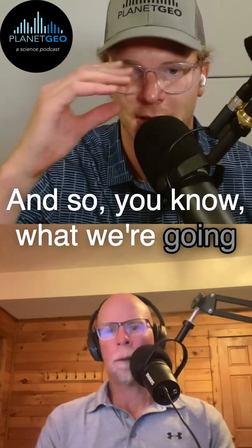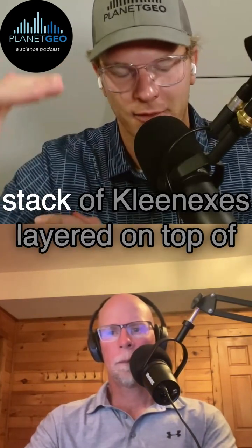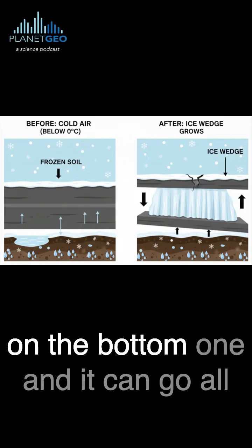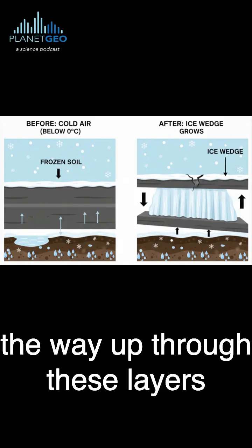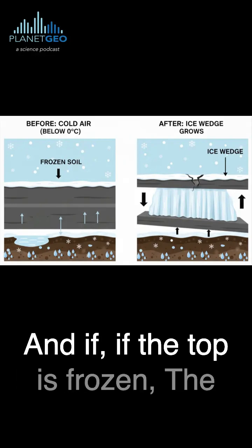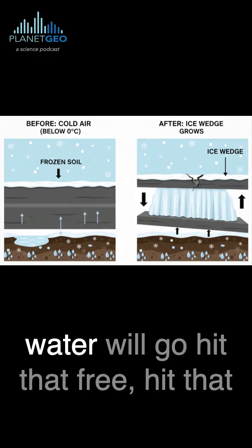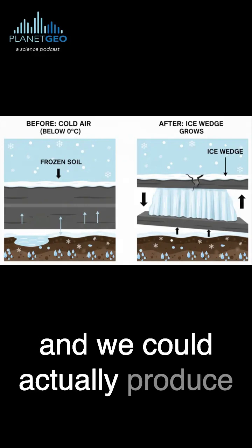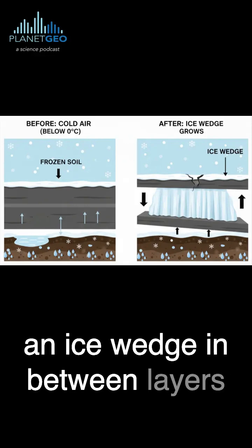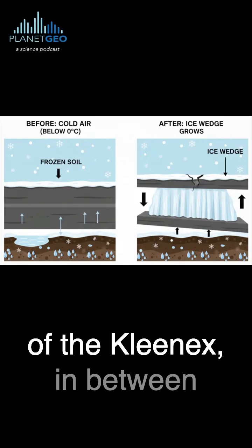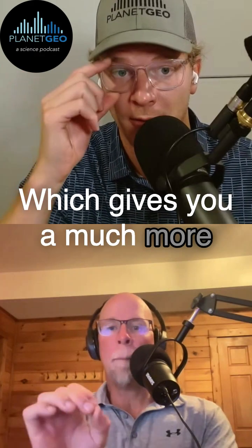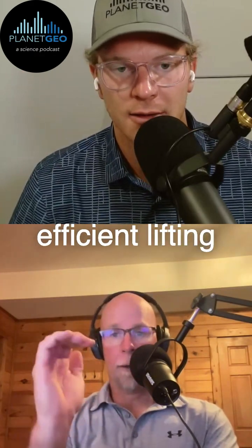What we're going to picture here is that we have a stack of Kleenexes layered on top of each other. We put a little water on the bottom one and it can go all the way up through these layers of Kleenexes. And if the top is frozen, the water will hit that freezing front and it'll freeze. We could actually produce an ice wedge in between layers of the Kleenex and in between the stacks of the Kleenex, which gives you a much more efficient lifting.